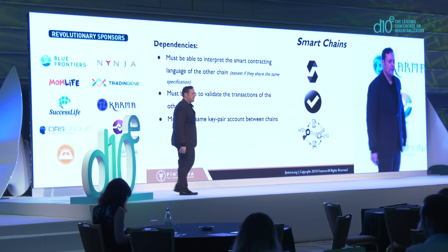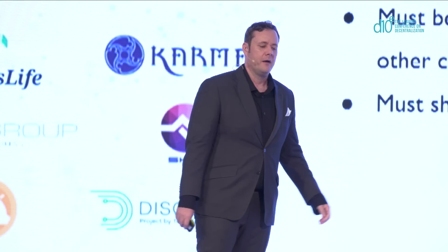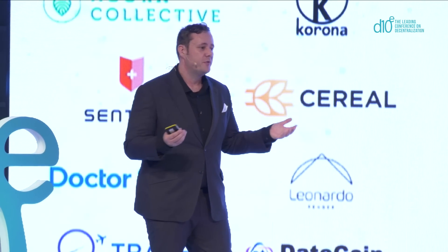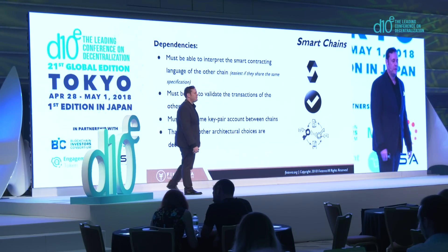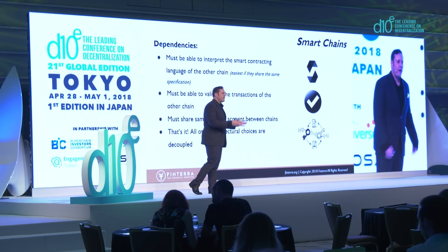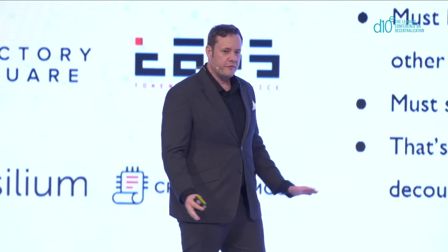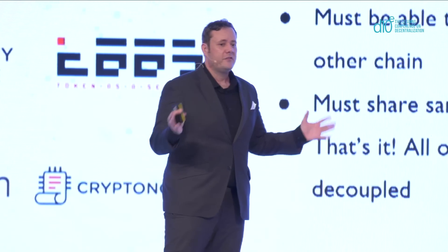The last dependency is that they have to share the same key pair account between two chains, which means they need to use the same cryptographic algorithm to generate these accounts. But that's it — these are the only three dependencies we need. All other architectural choices are decoupled. What I mean by that is, if I want to run a different consensus algorithm, a different peer-to-peer networking layer, or a different database, all of these decisions can be made independently on different chains.